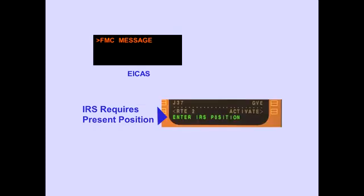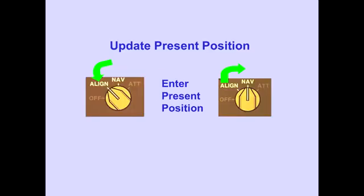The FMC message, enter IRS position, is displayed if the IRS ever requires a present position. To update the present position, rotate the IRS mode selector to align, then enter the new present position, and return the selector to NAV. This will correct the present position. Remember, the airplane must not be moved during the alignment.